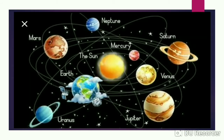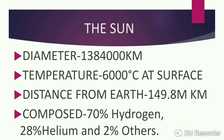As you all know, our solar system consists of 8 planets and the sun is considered as the center of our solar system. The 8 planets according to their distance from the sun are Mercury, Venus, Earth, Mars, Jupiter, Saturn, Uranus, and Neptune. We will take these 8 planets in our subsequent slides, but let's first of all discuss the sun.